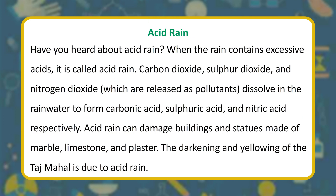Acid rain: when rain contains excessive acids, it is called acid rain. Carbon dioxide, sulfur dioxide, and nitrogen dioxide — released as pollutants — dissolve in rainwater to form carbonic acid, sulfuric acid, and nitric acid respectively. Acid rain can damage buildings and statues made of marble, limestone, and plaster. The darkening and yellowing of the Taj Mahal is due to acid rain.